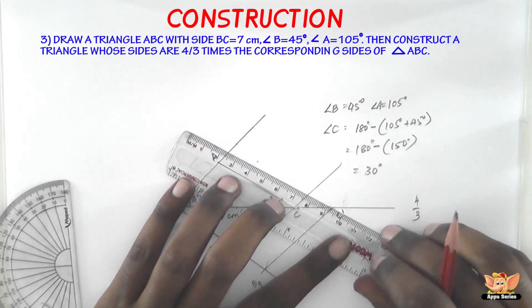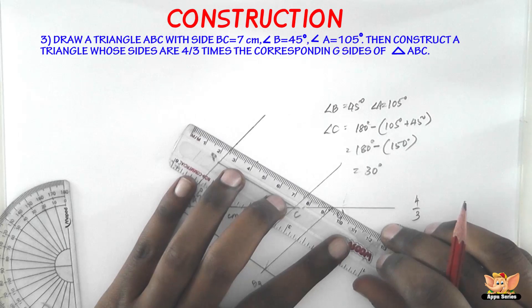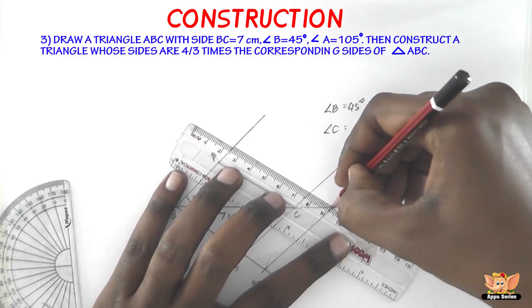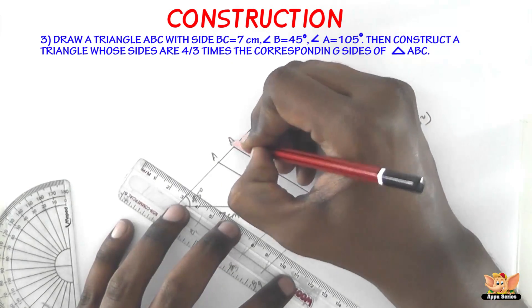And now join C dash to that point and extend it to meet A dash on the line AB. Here it is. And name this A dash.